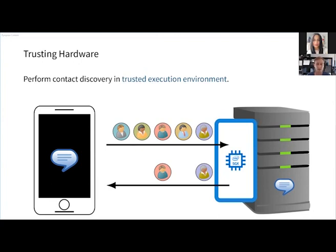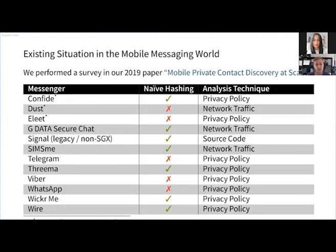These attacks pose some considerations if you want to use such a solution in practice. However, it is very performant and it is used by Signal. In a 2019 paper involving myself, Christian Rechberger, Thomas Schneider, Matthias Senker, and Christian Weinert, we performed a survey on the methods that current messengers are using for mobile contact discovery. We found that half of the popular messengers surveyed don't even use the naive hashing procedure but just upload contacts in plaintext. Some use naive hashing, and one was even adding a salt.